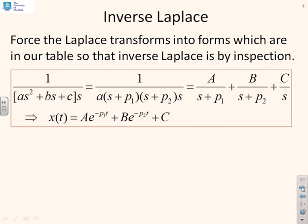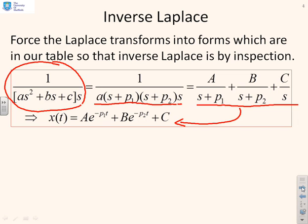We've got our transform which represents x of s: 1 over (as² + bs + c) times s. The first thing to do is to factorize this denominator. Now, you'll remember that we've assumed the roots or the poles are real, so I can write this as a times (s + p₁) times (s + p₂) times s. If I move to partial fractions, I can rewrite this as A/(s + p₁) + B/(s + p₂) + C/s. Having done that, I can use tables or standard inverse Laplace to write x of t equals A e^(-p₁t) + B e^(-p₂t) + C.